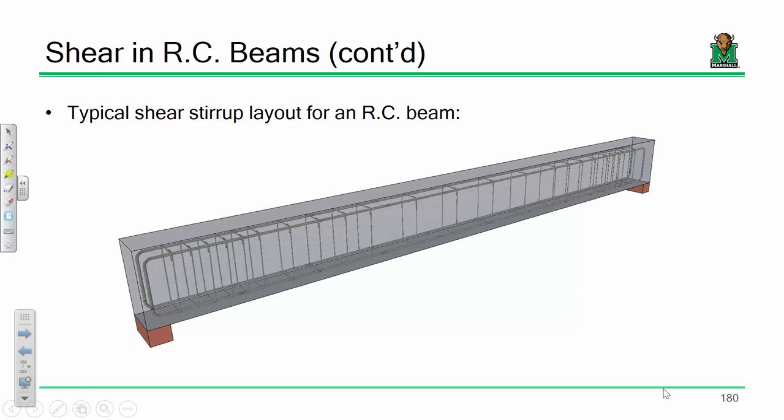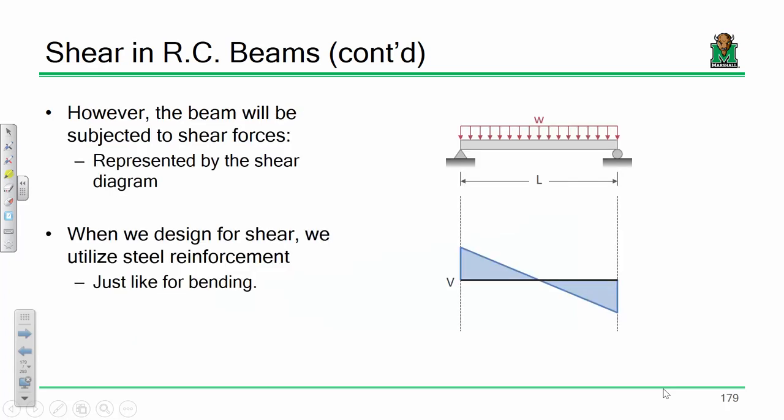And these hoops are primarily there to resist shear. We call them stirrups. And so when we go into shear design later, we're going to talk about how to lay out those stirrups. Spoiler alert, you'll see how there's more stirrups near the support than there is in the middle because there's more shear on the outside or near the supports than there is in the middle.